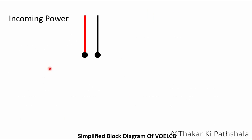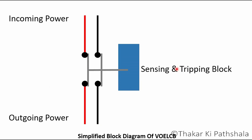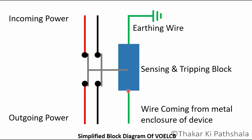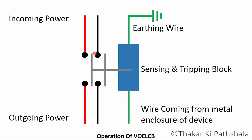As we can see in this diagram, this is the incoming power line and this is the outgoing power line. This block contains the tripping coil, which will energize and pull the plunger once the fault is detected. This wire goes directly into the ground via an earthing rod, and this wire is coming from the metal enclosure. If there is a fault, such as a bare wire touching the metal enclosure of a device, a voltage difference will be generated between the metal casing and ground, so the tripping coil will energize, pull the contacts apart, and the supply will be stopped.